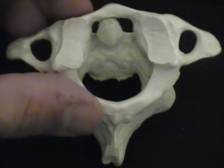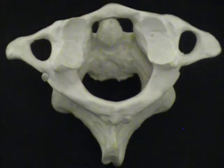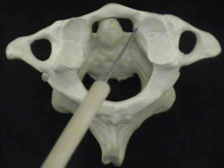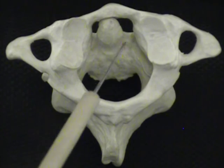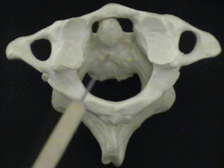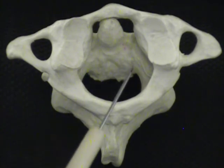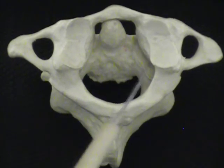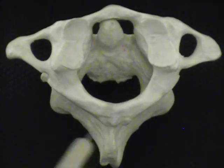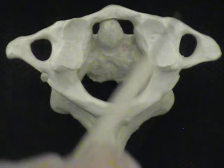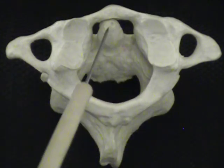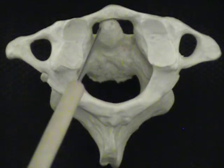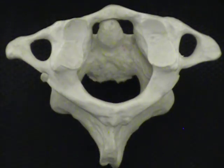The dens or odontoid process is designed for the atlas to actually ride right on top of it. There is a ligament that connects behind the dens or odontoid process, and this allows the vertebrae to actually rotate or spin around that axis of rotation.